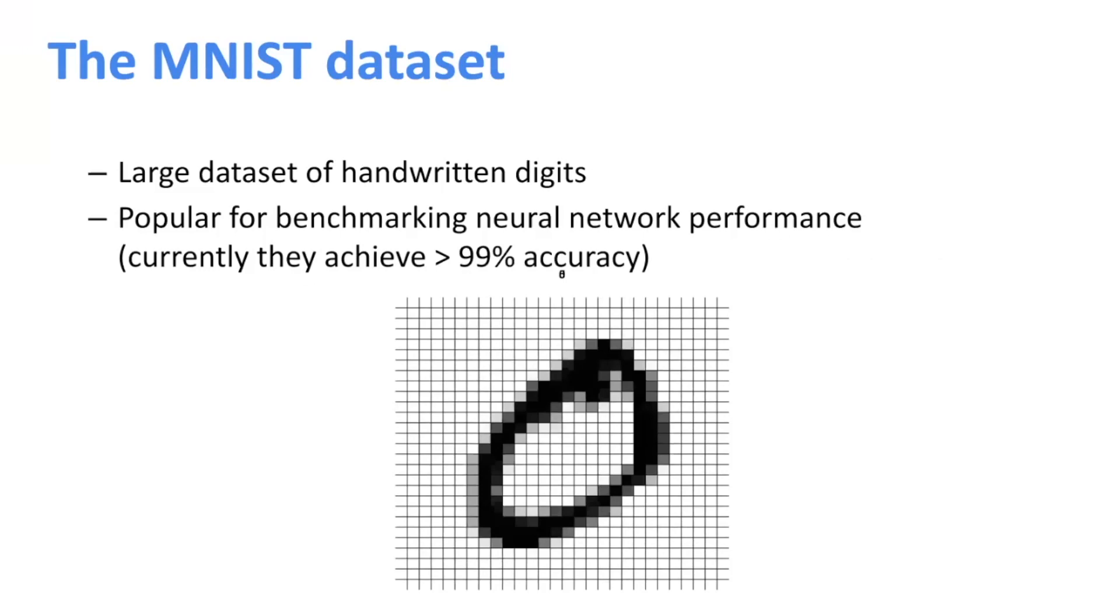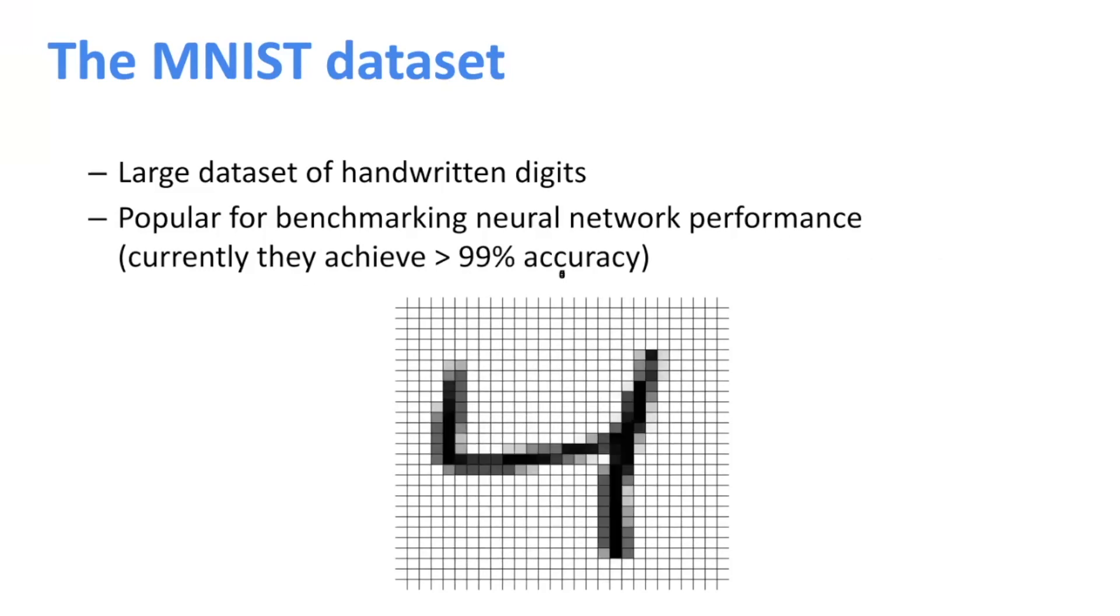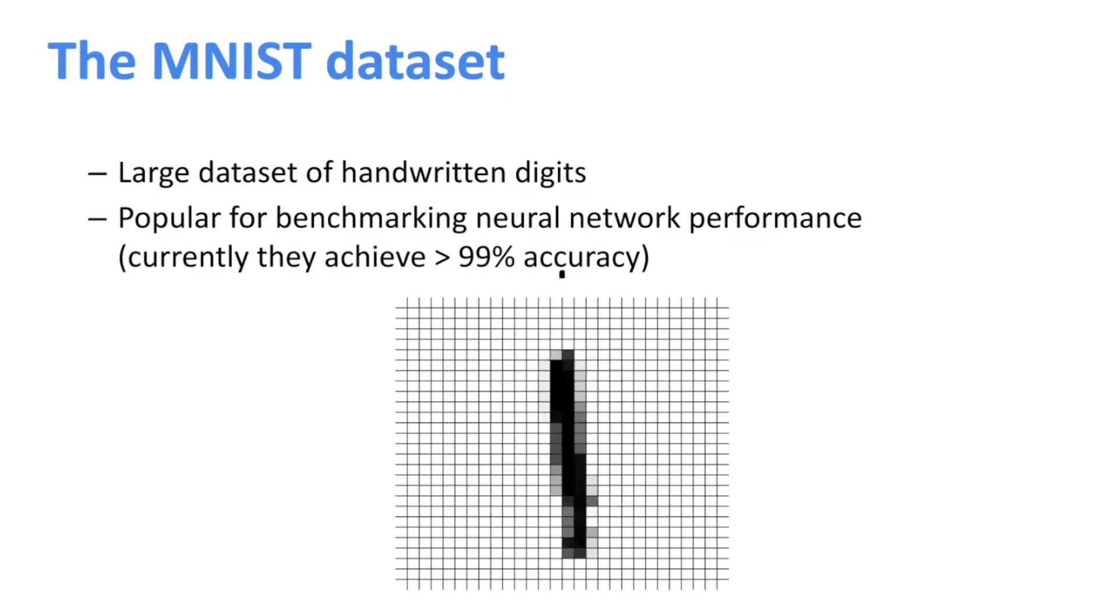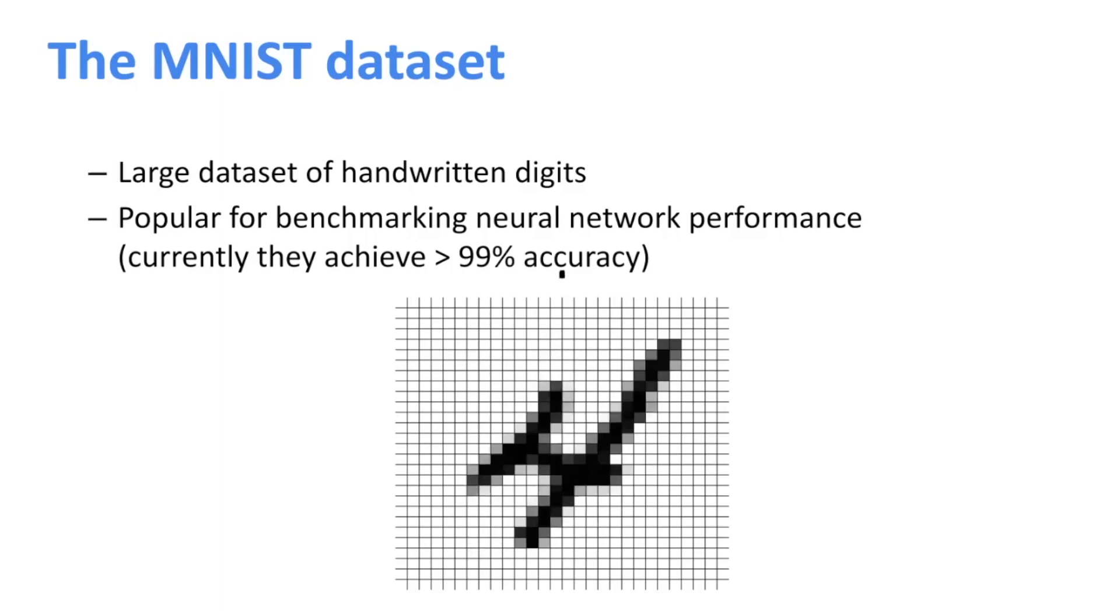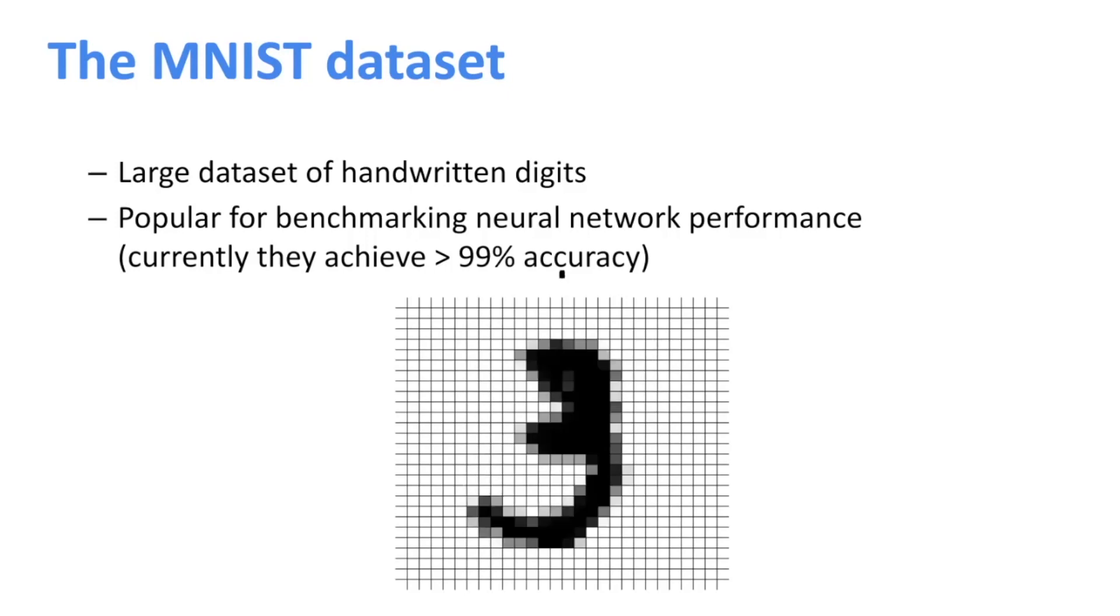To talk about this, the data that we talk about is this MNIST dataset. It's quite famous. It's basically a large set of handwritten digits. And it's a very popular benchmarking tool for neural network performance. Like six years ago, the performance I think was at 96% accuracy. And now they're way beyond 99%. I think it's 99.8% or something. So it really is nearly perfect at this point.